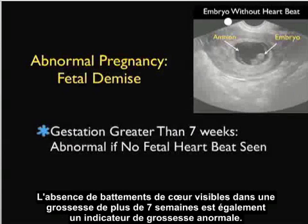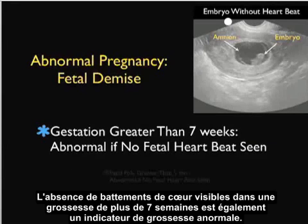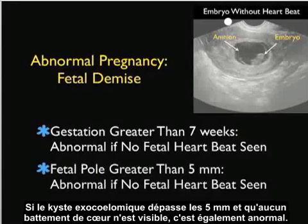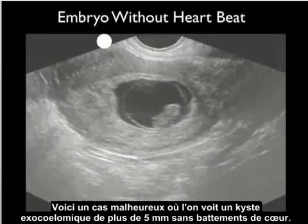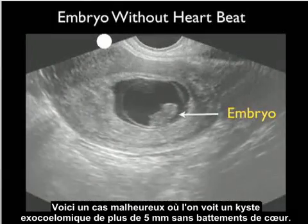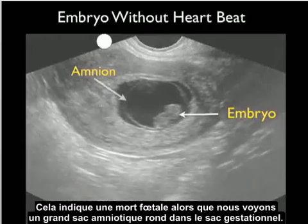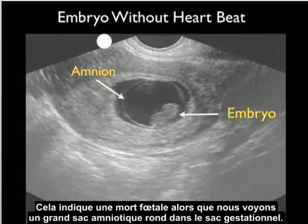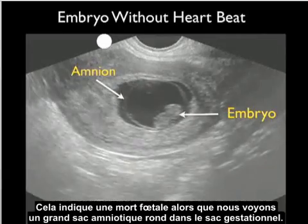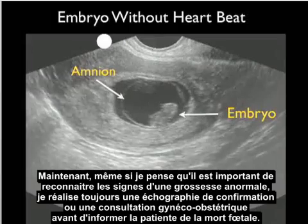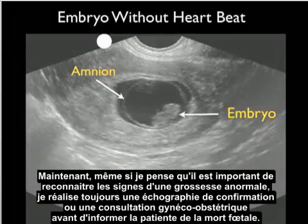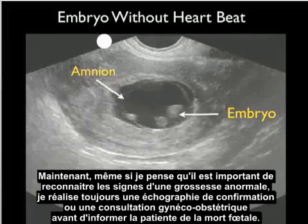Other indicators of an abnormal pregnancy with fetal demise: a gestation greater than 7 weeks is abnormal if no fetal heartbeat is seen, and if the fetal pole is greater than 5 millimeters in dimension, this is abnormal if no fetal heartbeat is seen. This was an unfortunate case in which we see a large fetal pole greater than 5 millimeters without a heartbeat, indicative of embryonic demise. We also see a large circular amnion within the gestational sac. I'll always get a confirmatory ultrasound and/or OBGYN consultation before giving the patient the news that there is a fetal demise.